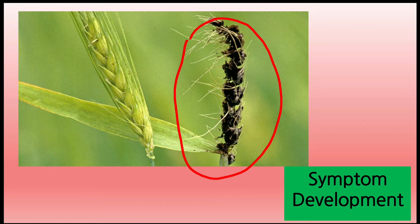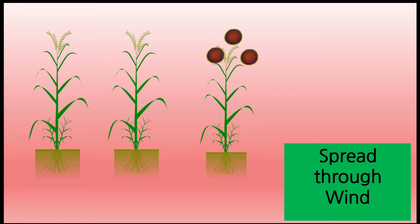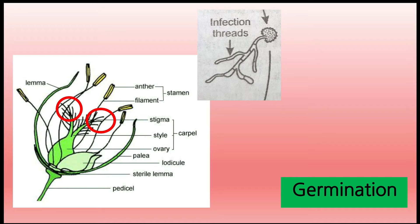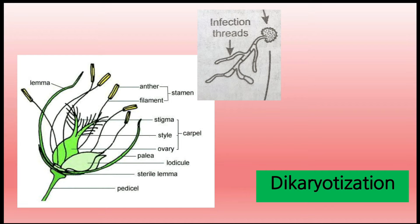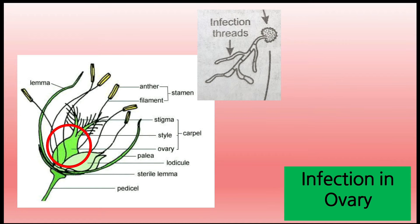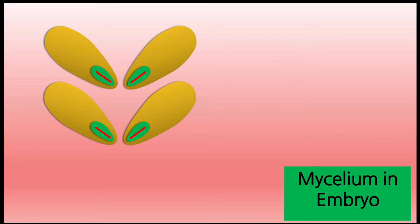The white papery membrane ruptures and spores spread by wind. Spores land on flower stigma, germinate, and form infection threads. Two haploid infection threads fuse to form dikaryotic mycelium. This dikaryotic mycelium passes through stigma to ovary and infects it. The mycelium is then present in the embryo as heterokaryotic/dikaryotic mycelium.